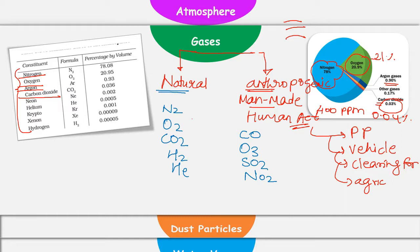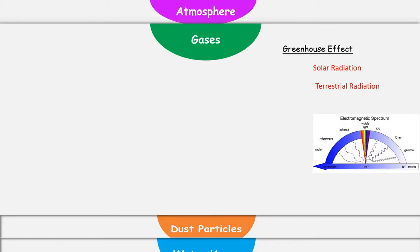Apart from this, gases can be grouped as non-greenhouse gases and greenhouse gases. But before seeing what are the classical examples of greenhouse gases, let's understand what exactly is greenhouse effect. Before understanding what is greenhouse effect, let's see what is solar radiation and what is terrestrial radiation. Solar radiation is emitted by the sun. These radiations are very high in energy and have short wavelengths.